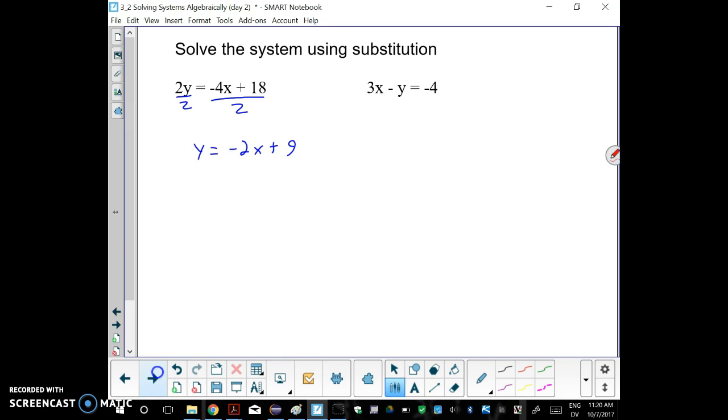From here, substitute into the other equation. So I'm going to go over here and do 3x minus, and then that's where y used to be. And in its place, put the statement negative 2x plus 9. This is kind of tricky here because this says subtract all of y, so we have to subtract all of that statement, which essentially means the negative symbol gets distributed to both parts.